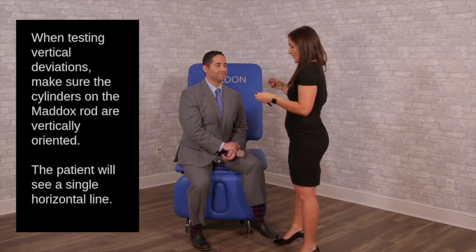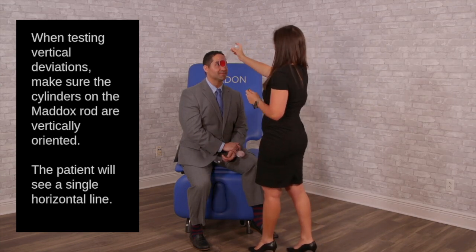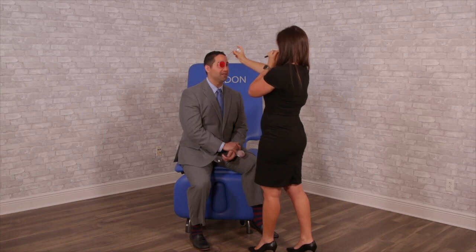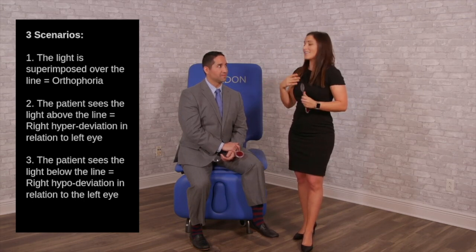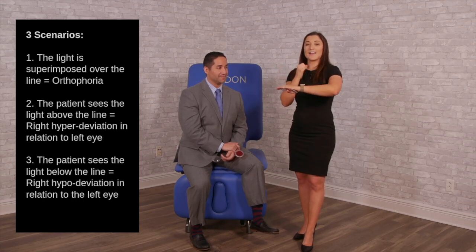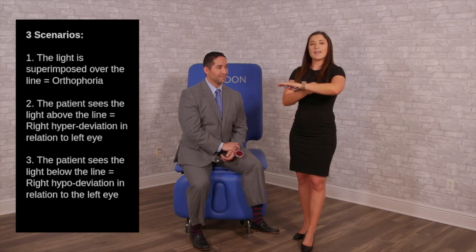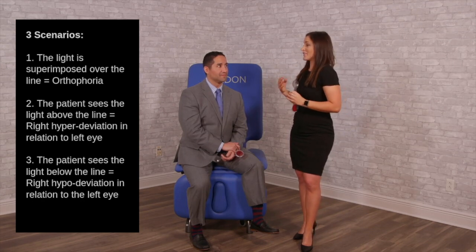For vertical deviations, we flip the Maddox rod over so we're looking at vertical lines, and the patient sees one horizontal line. Using the right eye, I hold the rod up and bring the light in, then ask the patient if they see one horizontal line and a light. There are three responses: if the light is right on the horizontal line it's normal; if it's above the line it's a hyper deviation; and if it's below the line it's a hypo deviation — both relative to the other eye.